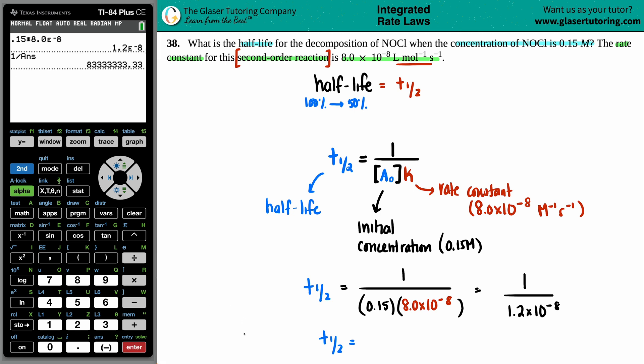There we go. Looks like two sig figs here. So we'll say 8.3 times 10 to the seventh.